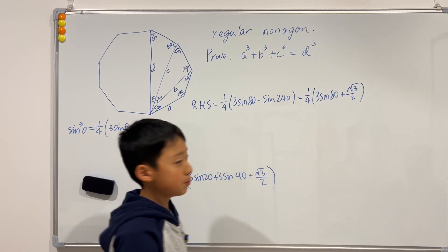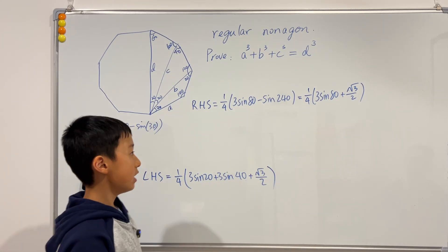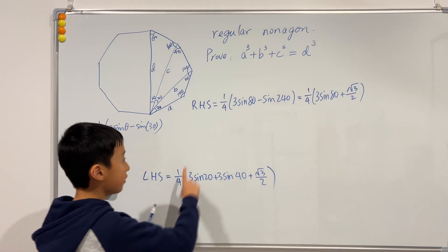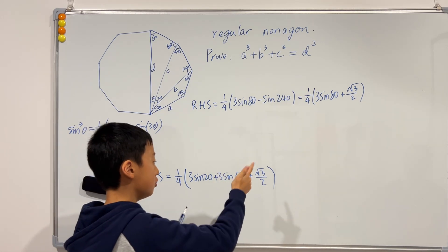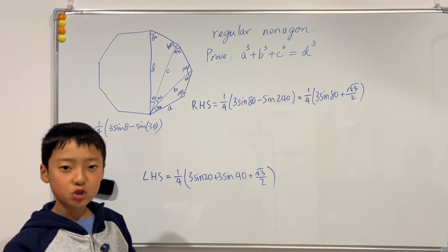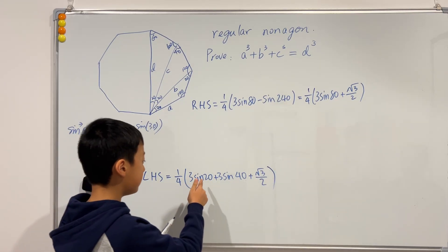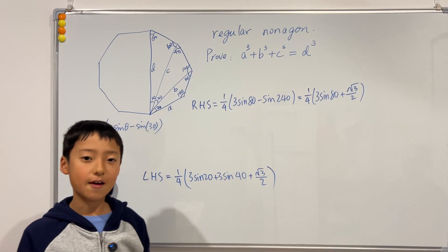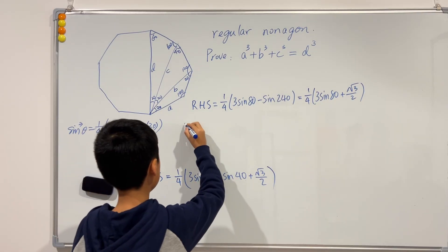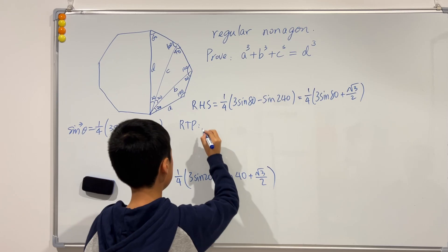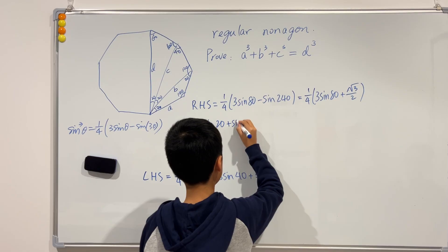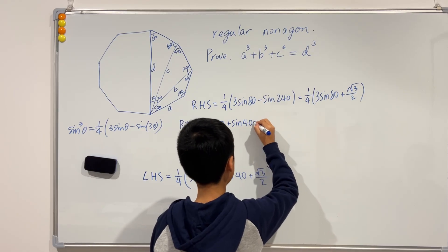So now we have to prove that the right-hand side equals the left-hand side. Let's first see which terms are similar or the same. 1/4 and 1/4 the same, square root of 3 over 2, square root of 3 over 2 the same, 3, 3, 3 the same. So we just have to prove that sine of 20 plus sine of 40 is equal to sine of 80. So I'm going to write that over here. Required to prove sine of 20 plus sine of 40 equals sine of 80.